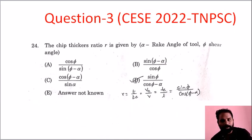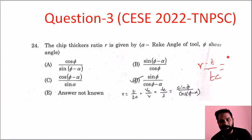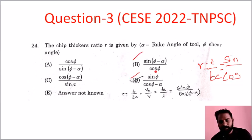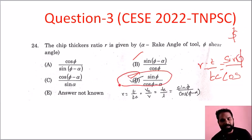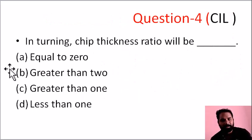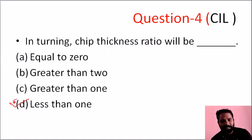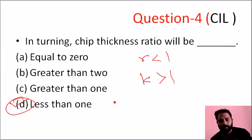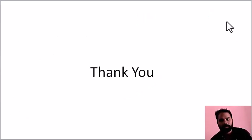Next question, Combined Engineering Service exam: Chip thickness ratio R equals T by Tc. In terms of angle, this equals sin(φ) divided by cos(φ minus α) — option D is the answer. Next question, from another exam: Chip thickness ratio is always less than 1, so option D is correct. R is less than 1, while chip reduction ratio K is greater than 1. Thank you.